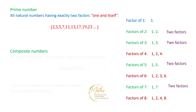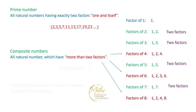Now we come to the definition of composite numbers. It is important to note that we are not saying the numbers which are not prime are composite. The definition is that all natural numbers which have more than 2 factors are called composite numbers. Prime numbers have exactly 2 factors; composite numbers have more than 2 factors. Numbers like 4, 6, and 8 all have more than 2 factors. The list of composite numbers includes 4, 6, 8, 9, 10, 12 and so on.